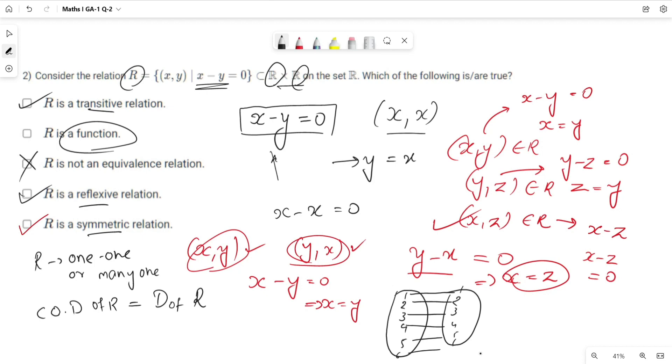So every value in the second set will be used, and the codomain would equal the domain. The meaning of codomain equal to domain is that every value from the second set should be used and no value remains unused. Here, every value will be used, so the codomain of R is equal to the domain of R.